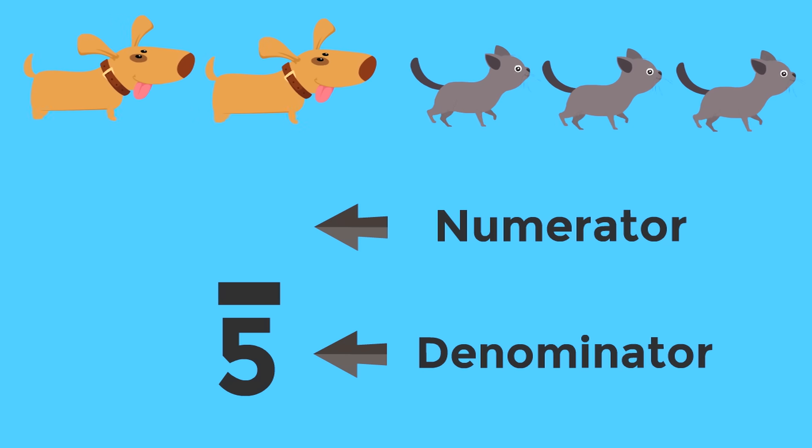Remember we're asking for the fraction of the pets that are cats. How many cats are there? Yeah. Three. So what's the numerator? Yeah. Three. Three is the numerator. Three fifths of the pets are cats.